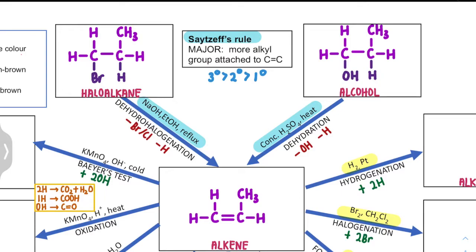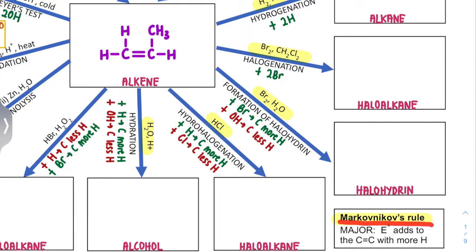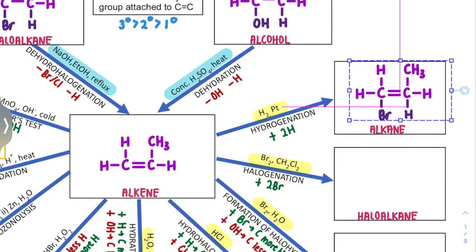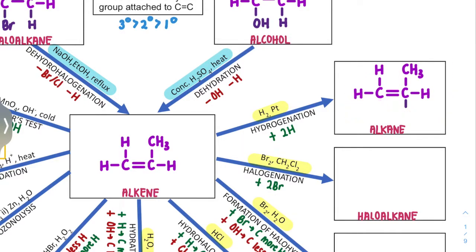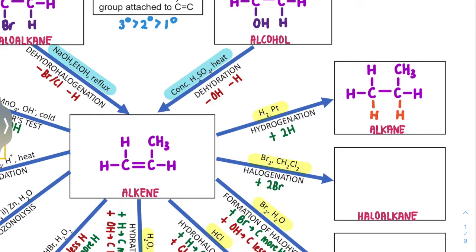Next, we're going to look at the electrophilic addition of Alkene, where electrophilic addition follows the Markovnikov rule — the electrophile will add to the carbon with more hydrogen. The first reaction is with hydrogen gas and a catalyst. What happens is that we add two hydrogen atoms. We remove one of the bonds of the double bond but form two new bonds, adding H to each carbon. That converts Alkene to Alkane.